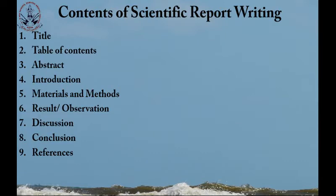The contents of a scientific report, such as a dissertation, include: title, table of contents, and often a table of illustrations. Then abstract, introduction, materials and methods, results or observations, discussion, conclusion, and references. These are things we have already discussed during various types of data collection, analysis, and reporting procedures, so we are not going into detail here.